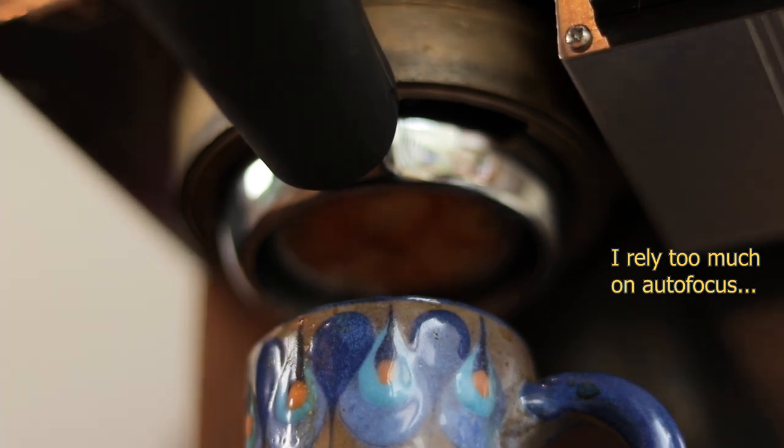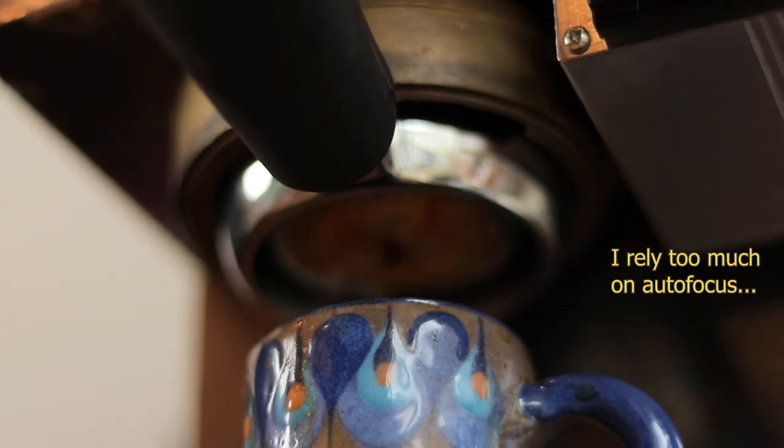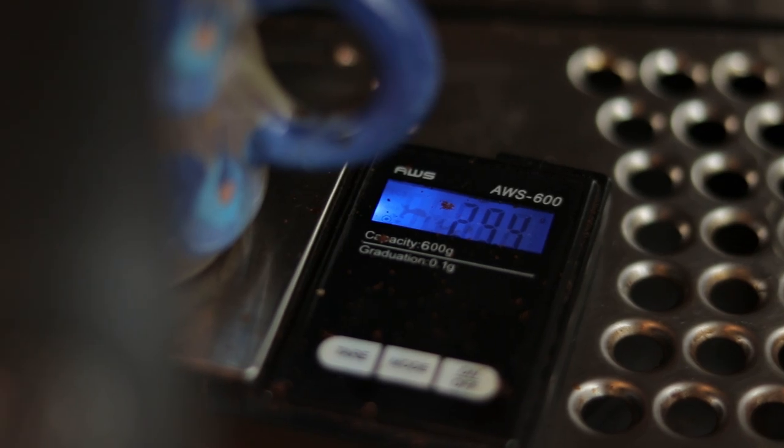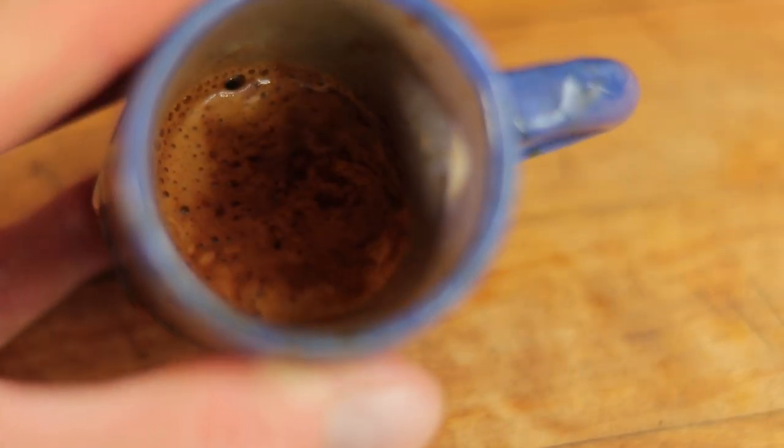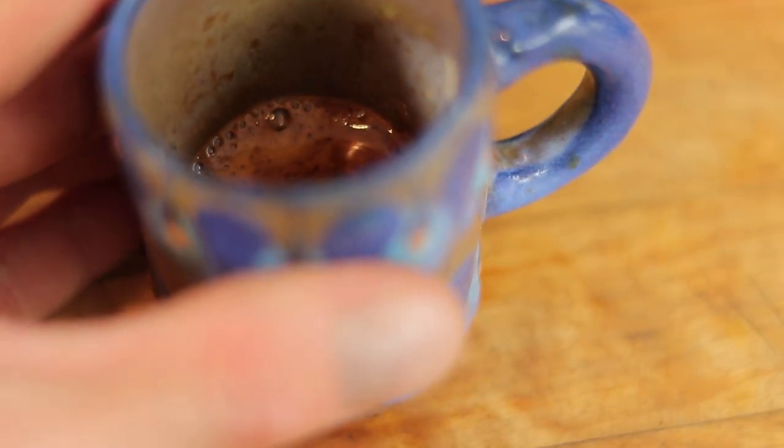This shot flowed much more evenly but a bit slowly. It produced 29 grams in 30 seconds. This shot would be great for milk drinks where you don't want to water down the drink as much. Definitely the best shot so far, but there's more room to improve.